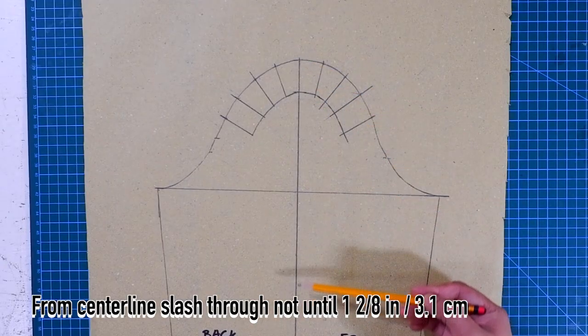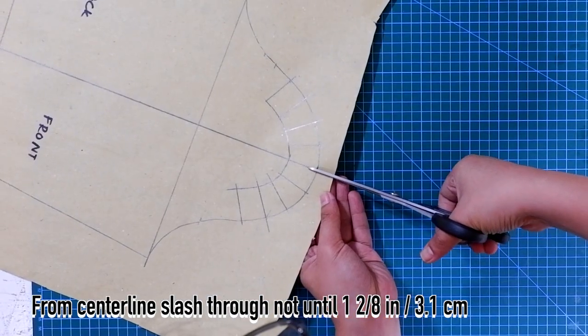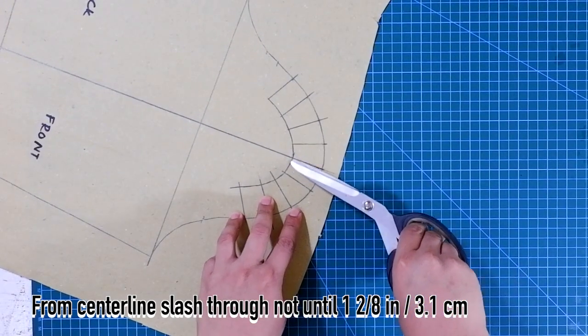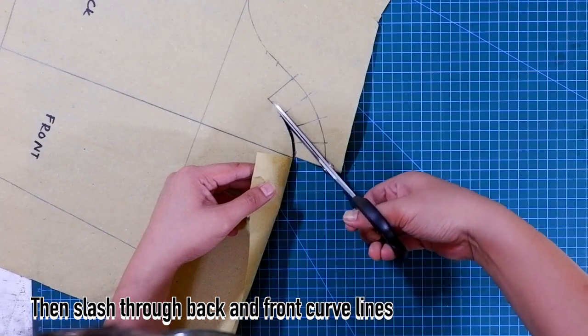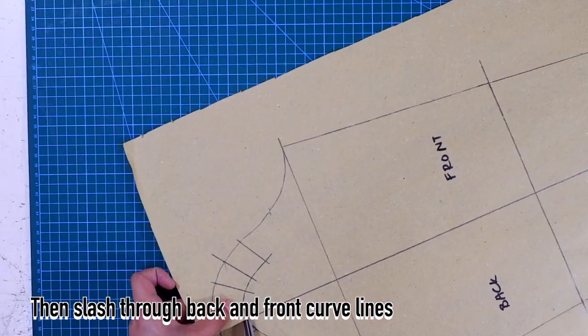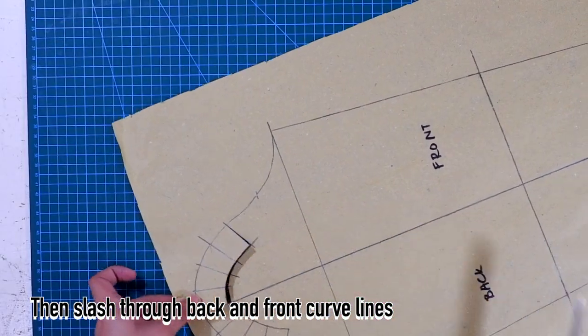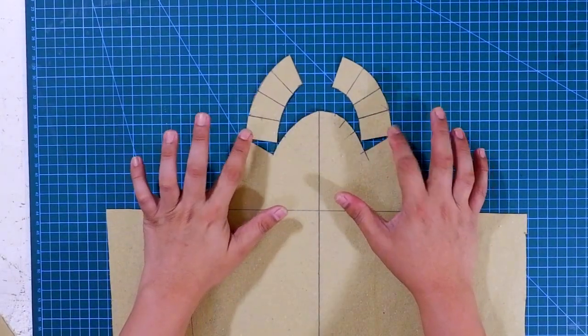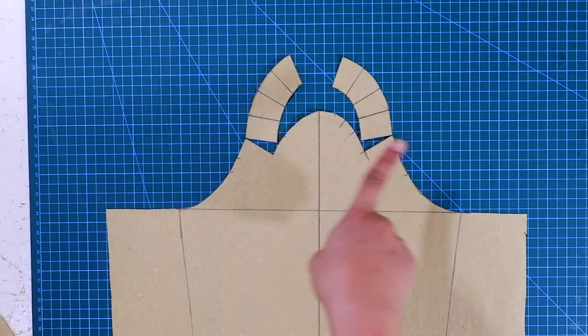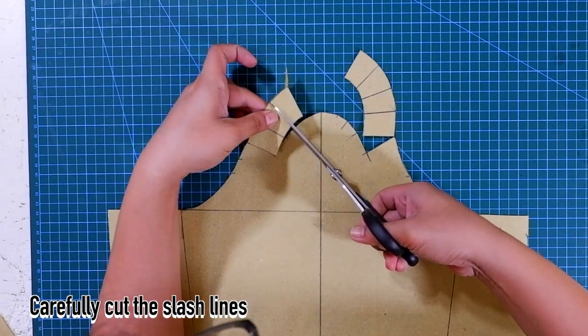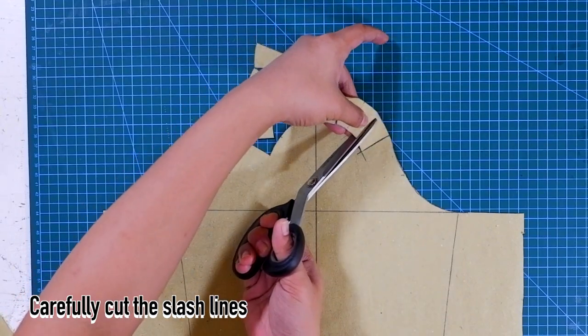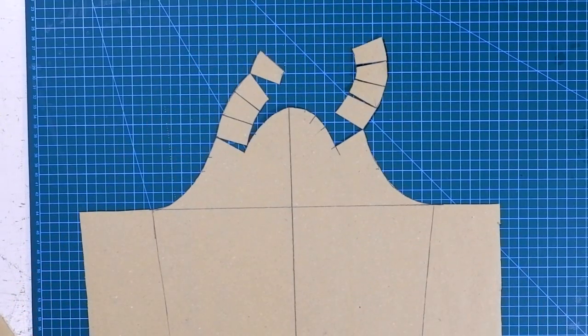From the center line, slash through not until the 1 4/8 inches or 3.1 centimeters mark. Then, slash through the curved line at the back part and at the front part, but do not cut through. Next, carefully cut the slash lines. Again, do not cut through.